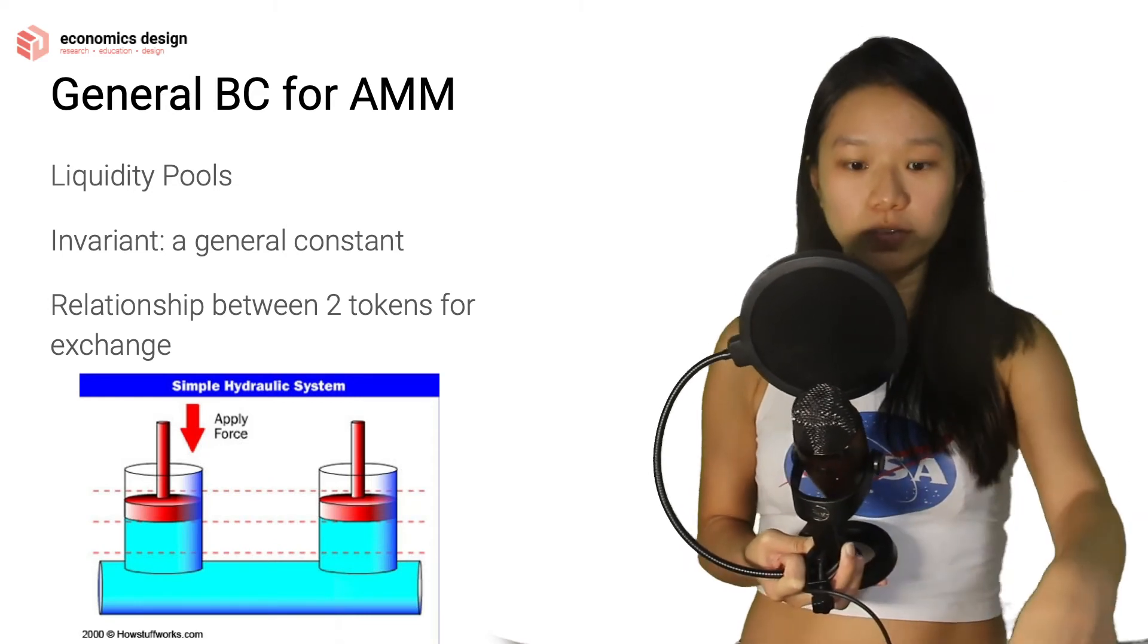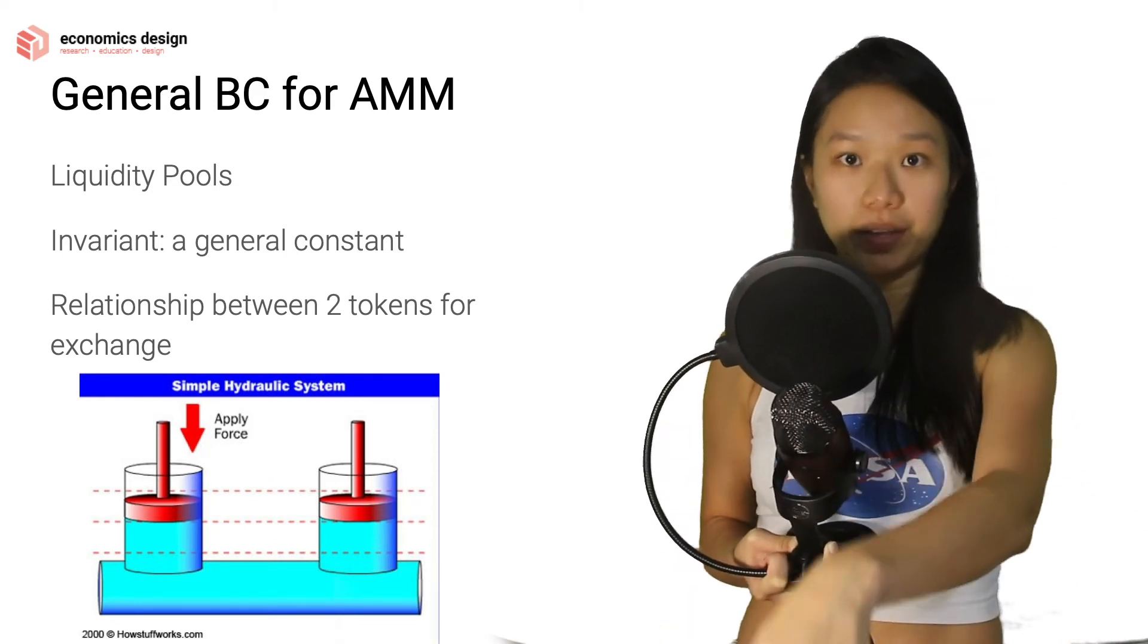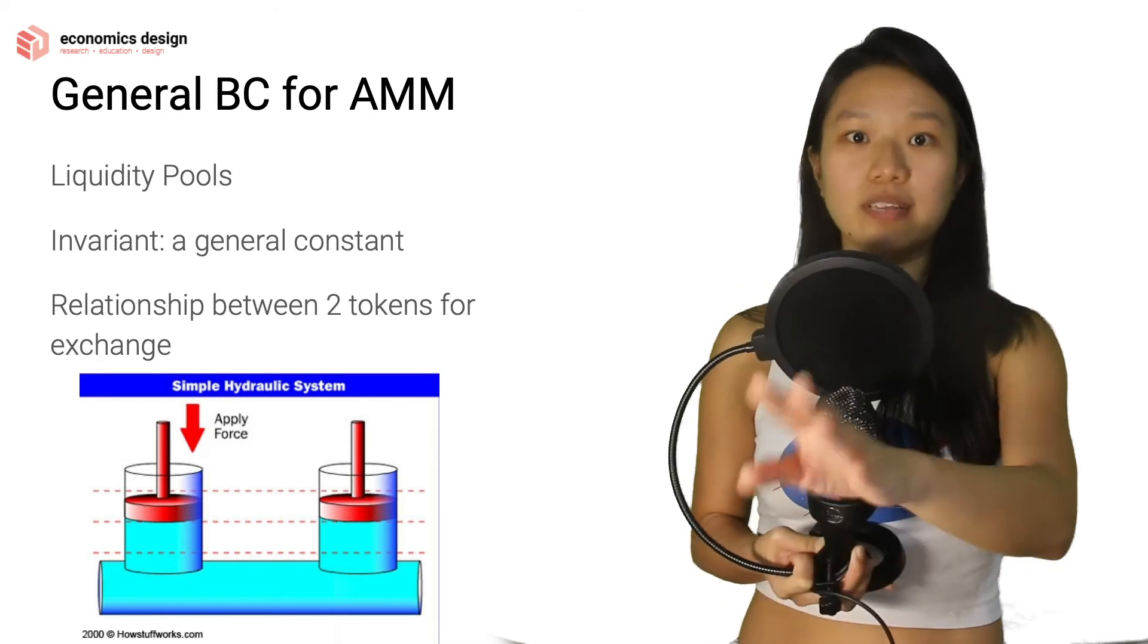The math function helps to balance between these two openings: token A, token B. One is affected by the other. So one goes up and down, the other responds equally.